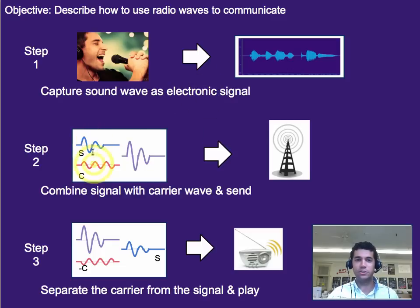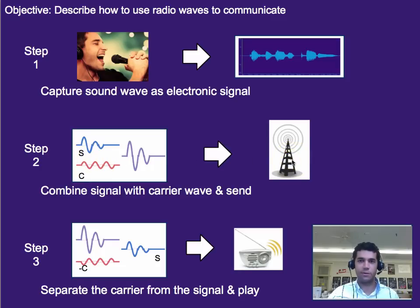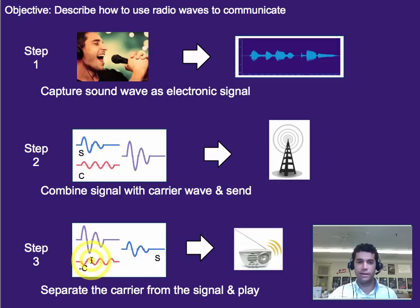We then combine that signal with the radio's carrier wave — the frequency the radio broadcasts out on — to create a new version of that wave where both are joined together. I like to think of it as we piggyback the signal wave on top of the carrier wave. We then use a radio broadcast tower or antenna to broadcast that message out. On the receiving end, they take that carrier wave and subtract it out of the combined wave, and what's left is the original signal wave.